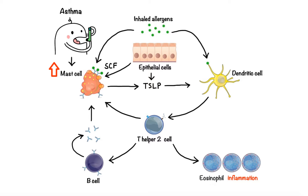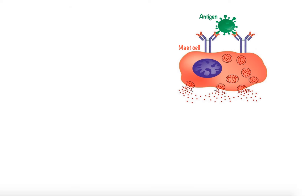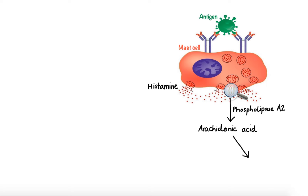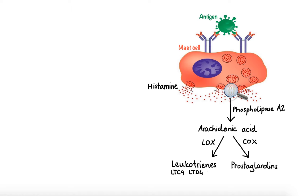Now that we have a big picture, let's take a closer look at how the mediators derived from activated mast cells contribute to bronchoconstriction and inflammation. When mast cells are activated, stored granule-derived mediators such as histamine are released alongside newly formed metabolites of the phospholipid arachidonic acid. During immunologic activation, arachidonic acid is liberated from the membrane phospholipids with the help of phospholipase A2 and is rapidly oxidized by either the cyclooxygenase or the lipoxygenase pathways to form prostaglandins and leukotrienes respectively. These mediators not only promote inflammation but also induce bronchoconstriction. The so-called cysteinyl leukotrienes — LTC4, LTD4, and LTE4 — have been shown to be the most potent bronchoconstrictors.